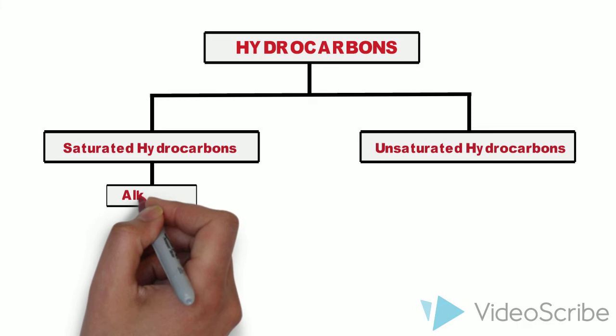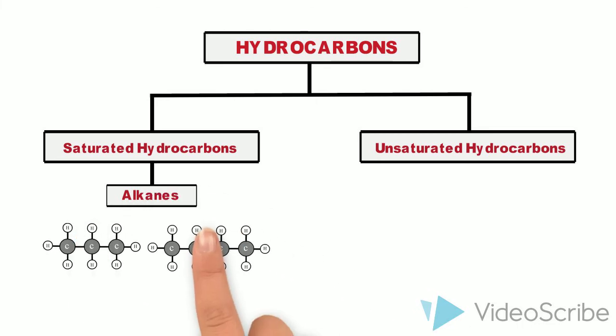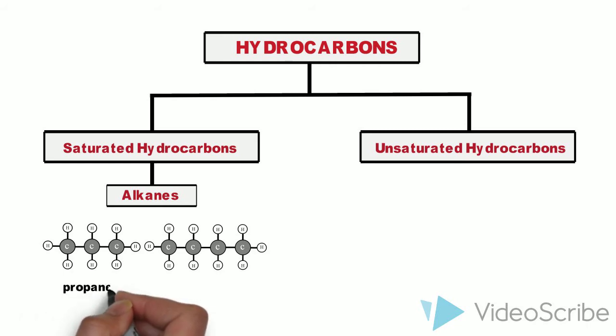Saturated hydrocarbons, like alkanes, have a single bond between any two neighbouring carbon atoms. For example, propane and butane.